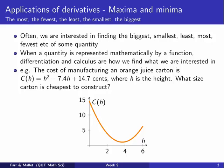Let's take a really simple example. Imagine that we could write the cost of manufacturing an orange juice carton using this function: c(x) = h² - 7.4h + 14.7 cents, where h is the height of the carton. If we were asked to find what size carton is the cheapest to construct, a simple way to do it would be to graph that function and find where the cost value is lowest, which is right here. We can figure out it's roughly h = 3.5, so the height of the carton that would be cheapest is 3.5.